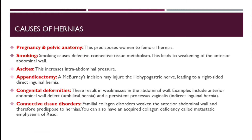Ascites — the accumulation of fluid in the abdominal cavity — increases intra-abdominal pressure as well. Appendectomy, for example via McBurney's incision, may injure the ilio-hypogastric nerve, leading to right-sided direct inguinal hernia. Congenital deformities result in weakness of the abdominal wall; examples include umbilical hernia and a persistent processus vaginalis, which causes indirect inguinal hernia. Connective tissue and familial collagen disorders weaken the anterior abdominal wall, predisposing to hernia; acquired collagen deficiency, for example in metastatic emphysema, can also contribute.